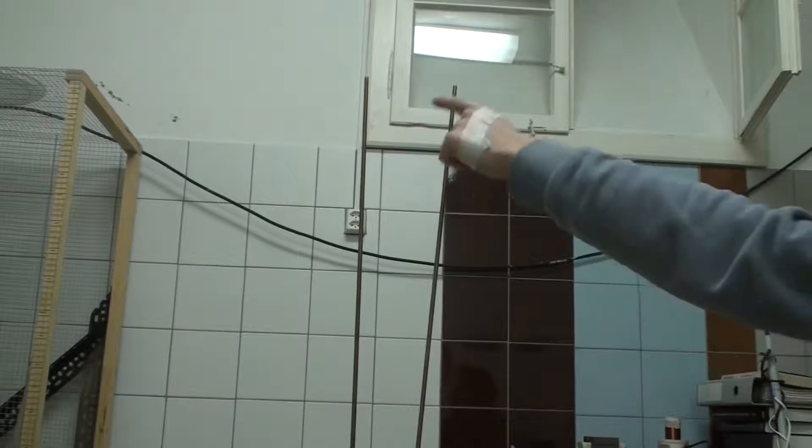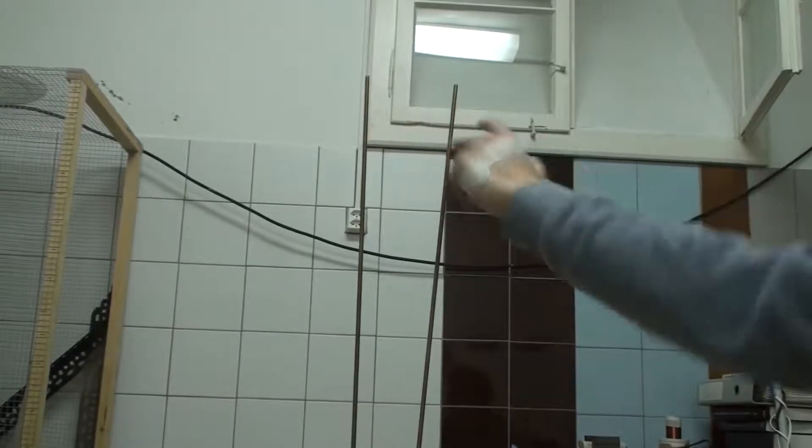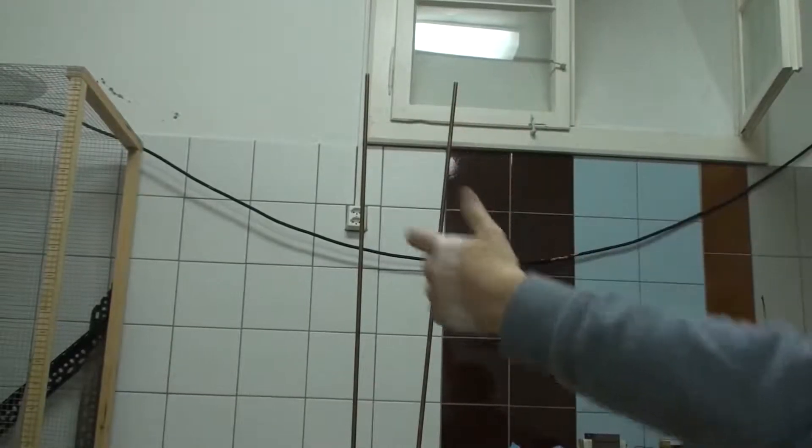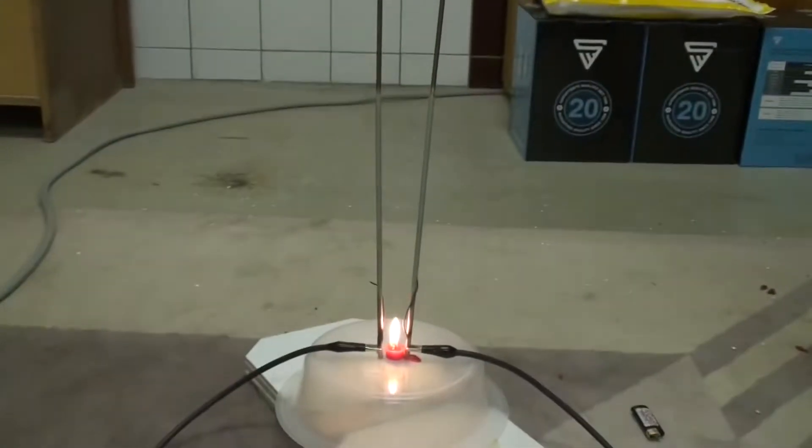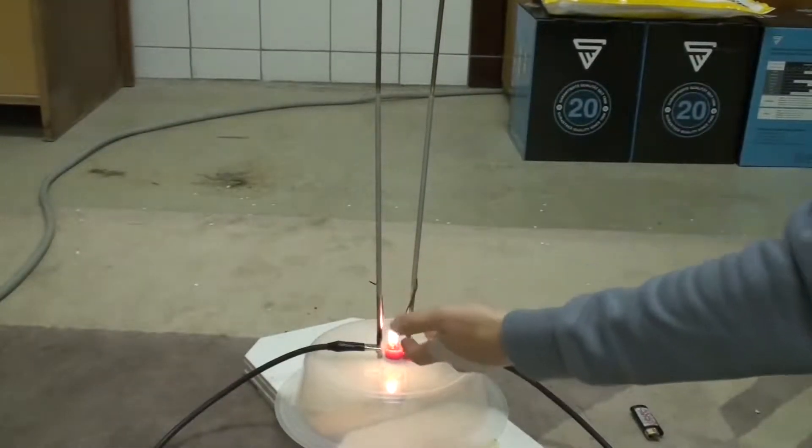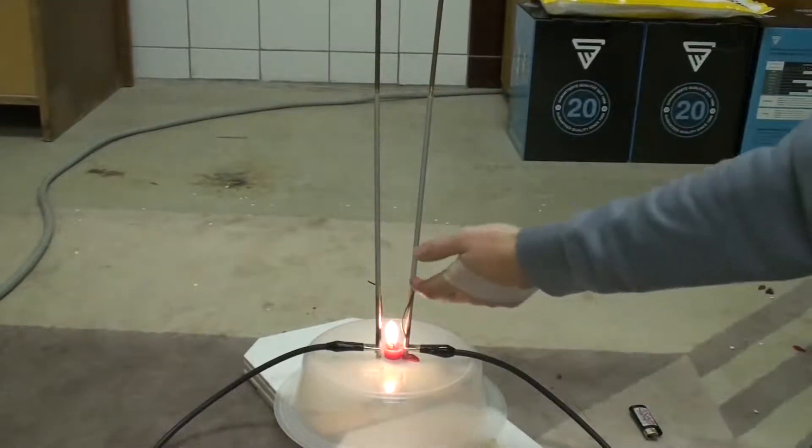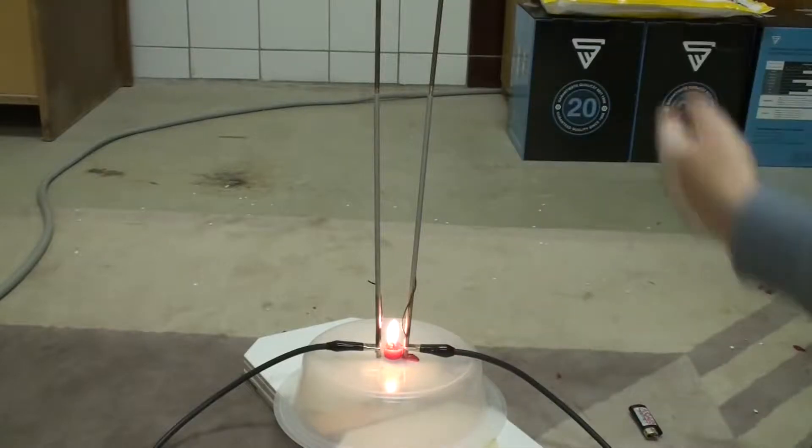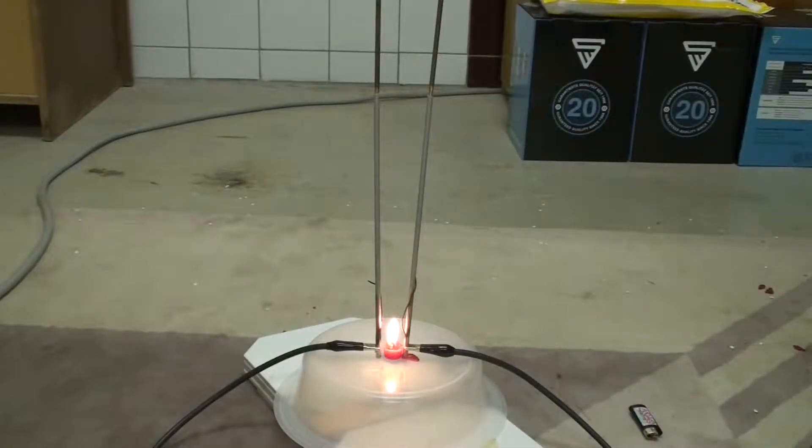Because at the top here the distance is too great for the arc to jump over and it becomes much easier to jump over at the bottom again where the candle is. And like that the cycle repeats and the arc goes upwards, breaks, and starts at the bottom again.